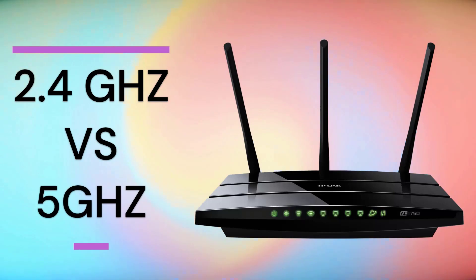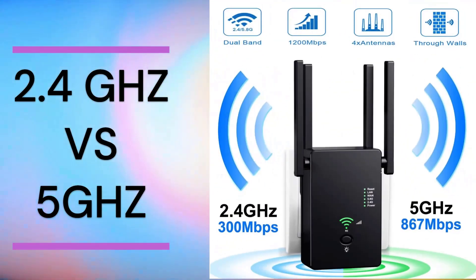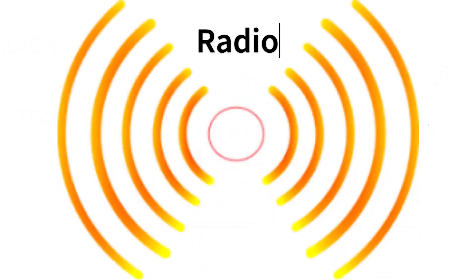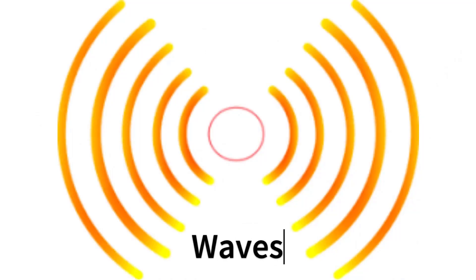What is the difference between 2.4 gigahertz and 5 gigahertz frequency bands? That's what we are going to dive into in this video. First off, a frequency band is how wireless data is transmitted between electronic devices. These frequency bands are radio waves that carry data, and they are either 2.4 gigahertz or 5 gigahertz.